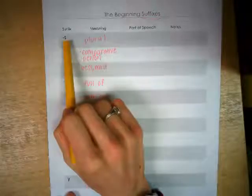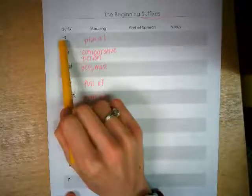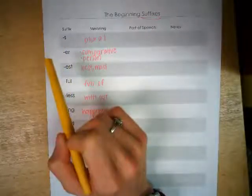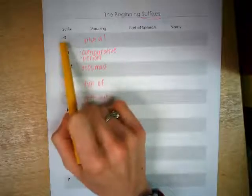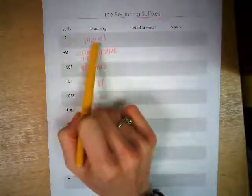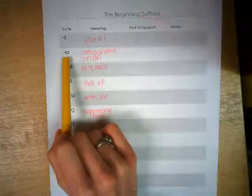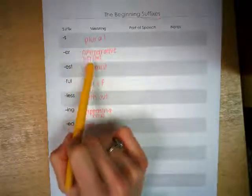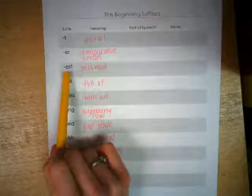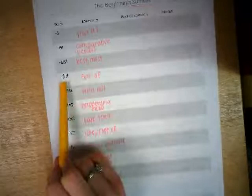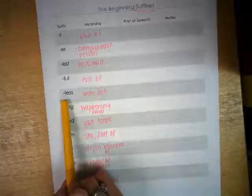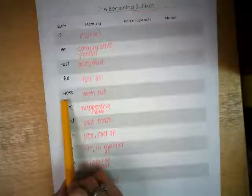This is consonant suffix S. It's a consonant suffix because it starts with a consonant, and it's important that we identify that for later when we know how to spell words with suffixes. Consonant suffix S says 's' or 'z' and it means plural. Vowel suffix E-R says 'er' and it's a comparative or it means person. Vowel suffix E-S-T says 'est' and it means best or most. Consonant suffix F-U-L says 'ful' and it means full of. Consonant suffix L-E-S-S says 'less' and it means without.